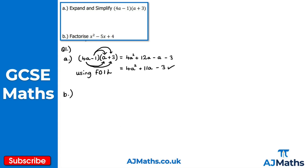Moving on to part b: factorize x squared minus 5x plus 4. The way I like to factorize a quadratic like this is by using TEAM. I need two numbers I can multiply together to get the end number, positive 4, and add together to get the middle number, minus 5.